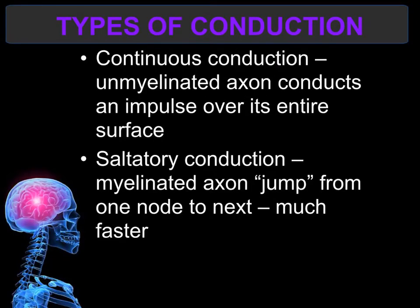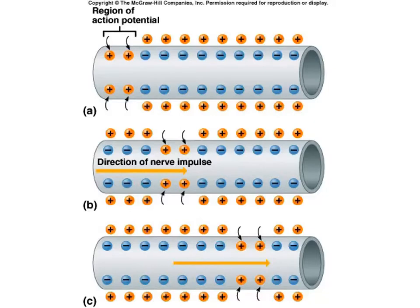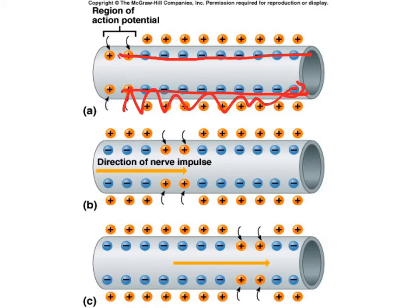There are two types of conduction. Continuous conduction means an action potential occurs at every point along the entire axon, and this occurs in unmyelinated axons — axons that do not have the extra myelin layer. Saltatory conduction occurs in myelinated axons, where the nerve impulse jumps from one node of Ranvier to the next rather than traveling continuously along the whole axon.